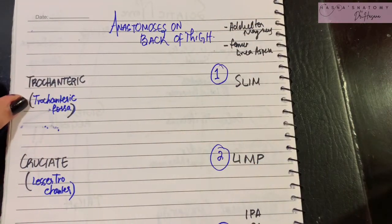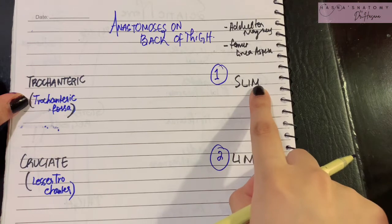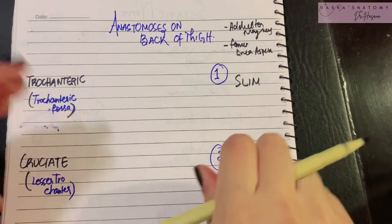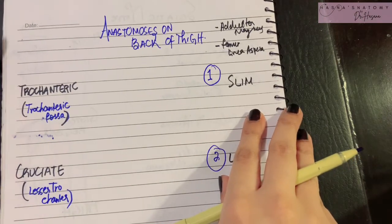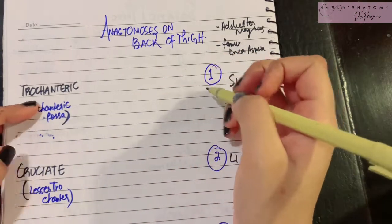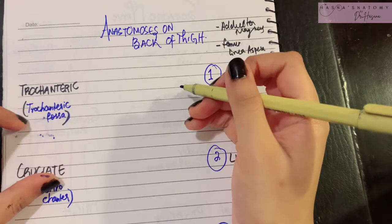The trochanteric anastomosis is very important and could be asked as an individual question. It is occurring between four arteries. Anastomosis is basically a connection between various arteries that allows for an alternate passage of blood supply in case one passage is blocked. The trochanteric anastomosis mostly occurs in the trochanteric fossa of the femur.